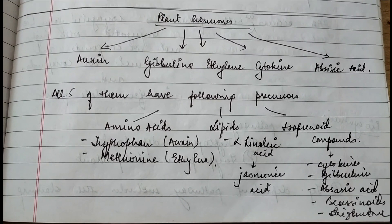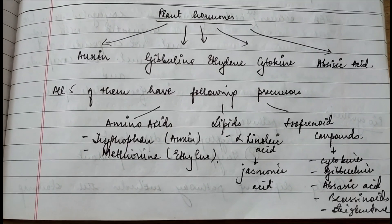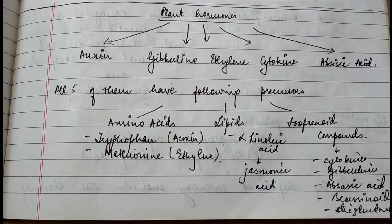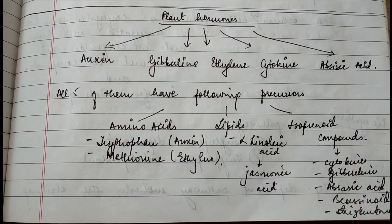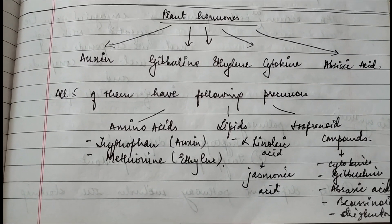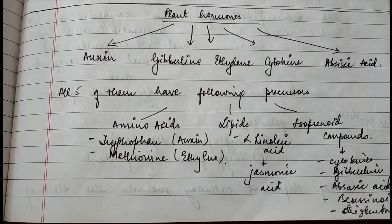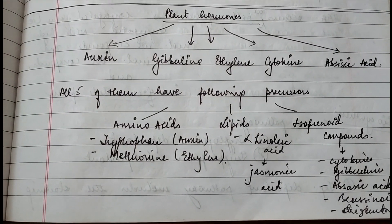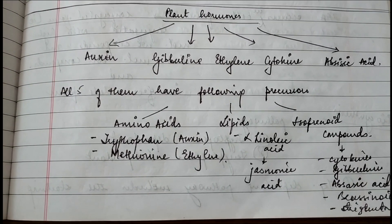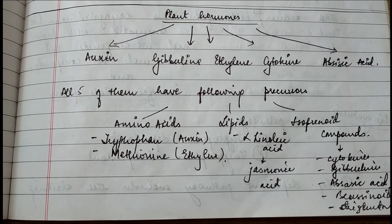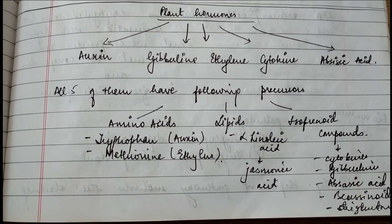First, we'll talk about amino acid precursors. In the case of amino acids, tryptophan and methionine are used as precursors. Tryptophan is the precursor of auxin, which is the first hormone to be recognized, and methionine is the precursor of the ethylene hormone.